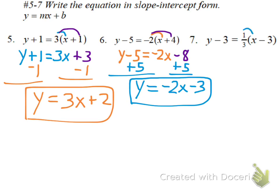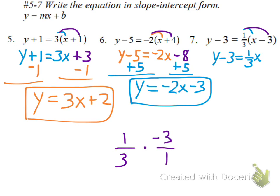To get rid of our parentheses on problem 7, distribute. 1/3 times x is 1/3 x. And then 1/3 times negative 3 — if you need to, you can write it out. Negative 3 as a fraction would be negative 3 over 1. 1 times negative 3 is negative 3, 3 times 1 is 3. Divide that, you get negative 1. To get rid of the minus 3, add 3 to each side. So we get y equals 1/3 x plus 2.